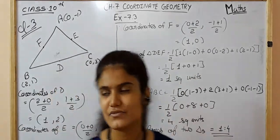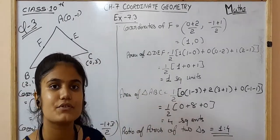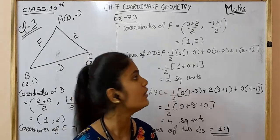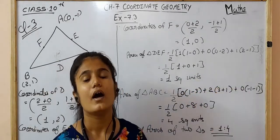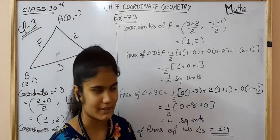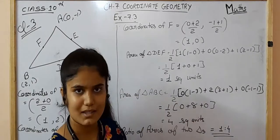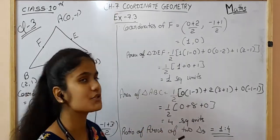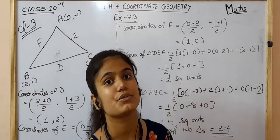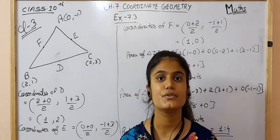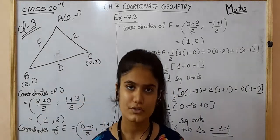Now we find the area of triangle DEF using the area of triangle formula: 1/2 into X1(Y2 − Y3) + X2(Y3 − Y1) + X3(Y1 − Y2). Substituting the coordinates of D, E, and F, we get the answer as 4 square units. So the ratio of the two triangles is 1:4. In this question, we used both the midpoint formula and the area of triangle formula. Pause the video to note the solution.